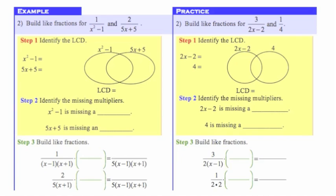I'm going to start by factoring x squared minus 1. This is a difference of squares, so I'm going to factor this into (x plus 1) and (x minus 1). With 5x plus 5, I have a greatest common factor of 5 that I can factor out. When I factor out that 5, I'll have 5 times (x plus 1). I've got my factors done, now I need to put that into the Venn diagram.